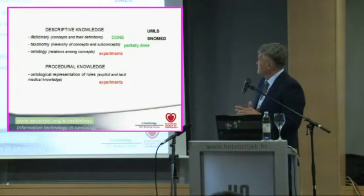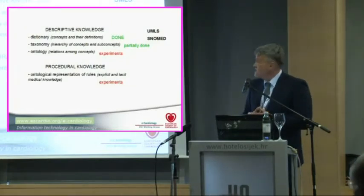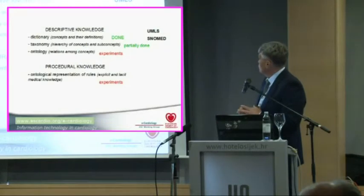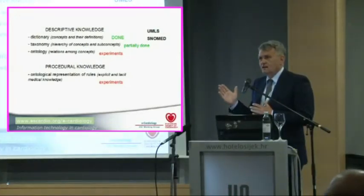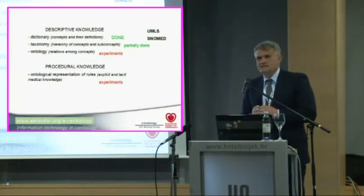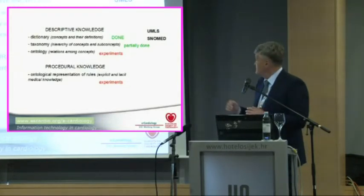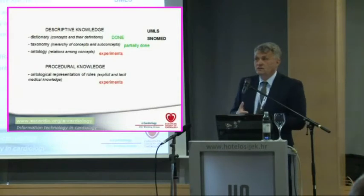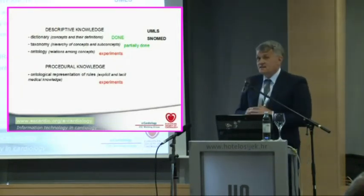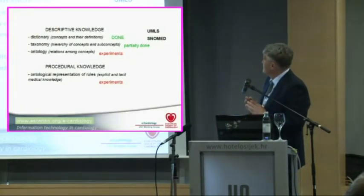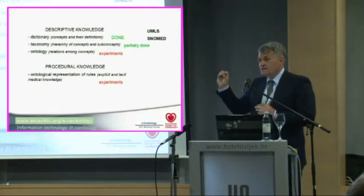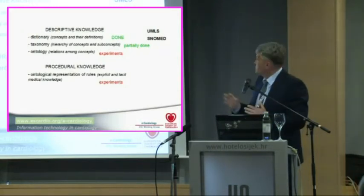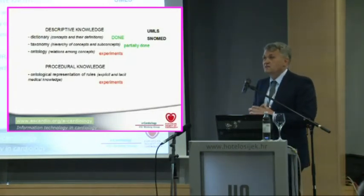In descriptive knowledge, we can talk about dictionaries, taxonomies, and ontologies. Today we already have dictionaries. We have UMLS — that is the Unified Medical Language System — which I prefer. We also have SNOMED — that is the Standardized Nomenclature of Medicine of Clinical Terms. It's available in English, Spanish, Japanese, Russian, and a few languages. These dictionaries also represent, partially, good taxonomies. Dictionaries introduce concepts and define them very precisely. Taxonomy means a tree of concepts. So UMLS and SNOMED already partially present good taxonomies.